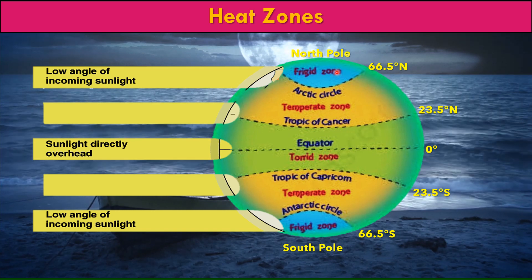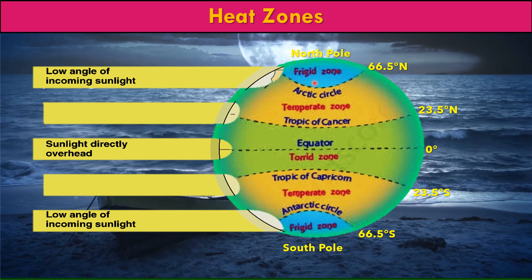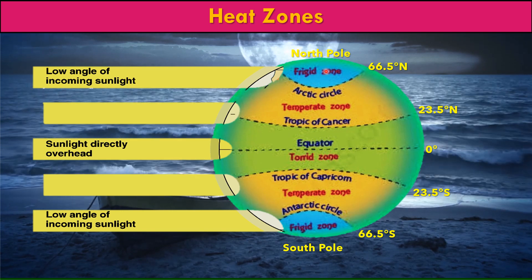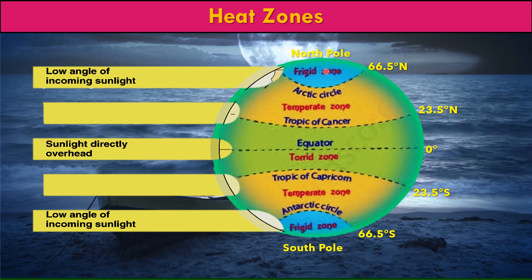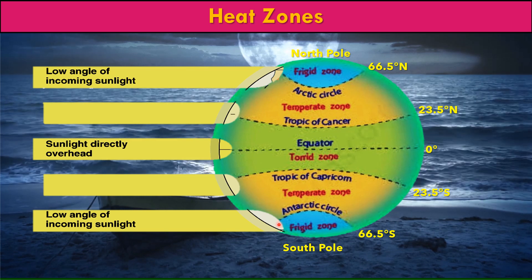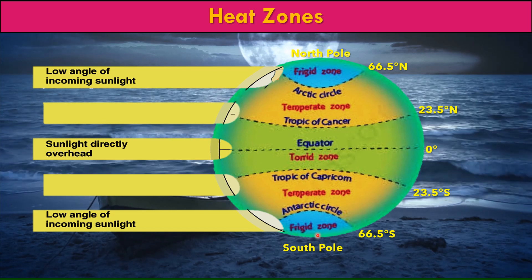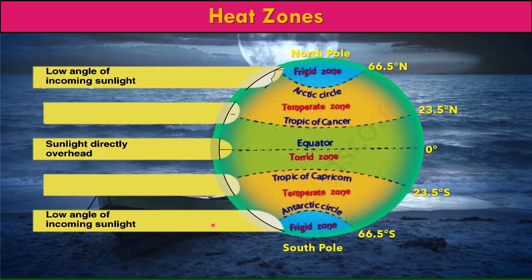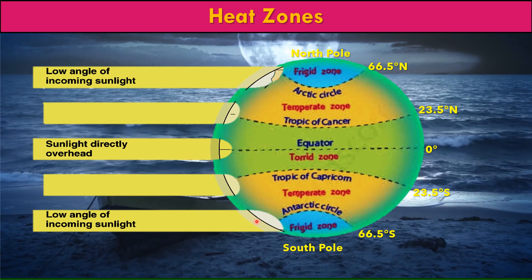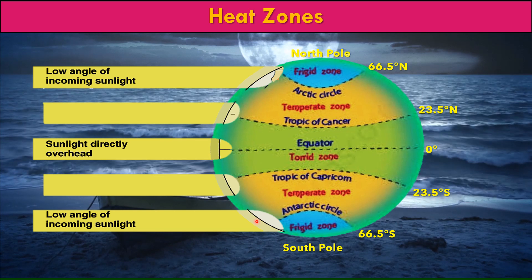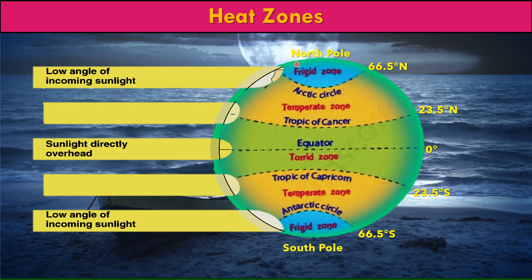The frigid zone lies to the north of the Arctic Circle in the northern hemisphere and to the south of the Antarctic Circle in the southern hemisphere. Here the sun's rays are very slanting, so this zone receives a very low amount of heat and is therefore very cold.